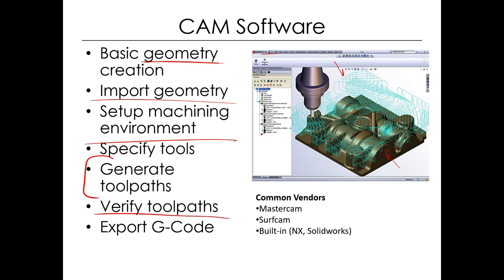Verify the tool paths — you can simulate the tool path and actually simulate material removal from stock down to the finished part, to verify the tool paths do what you want. Then you export G-code. G-code is the actual code that goes into most machines — almost every CNC machine is controlled by G-code. In the old days, back when G-code was invented and done on punch cards, this was done by hand. It was basically a programming language for running these machines automatically. Nowadays, you really just need to glance over the G-code to make sure things look right, then run it into the machine and validate it.